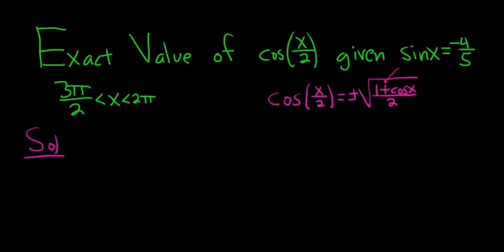The first step in this problem is to figure out whether we're using the plus or the minus. In order to do that we have to figure out where the angle x over 2 is. First we're told that the angle x is between 3 pi over 2 and 2 pi, so we write that down.